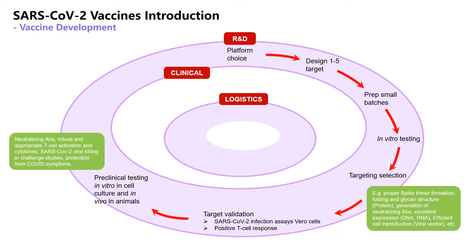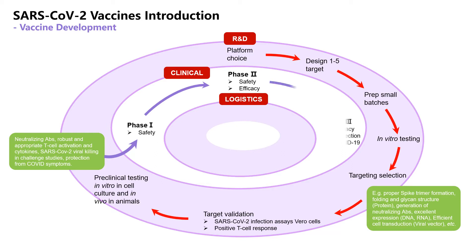If encouraging results are shown in the preclinical stage, indicated by various parameters in the green box, the candidate vaccine is taken to the clinical testing stage, which consists of testing in human volunteers in three stages of clinical trials.